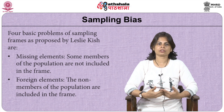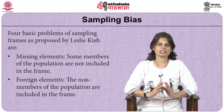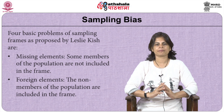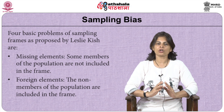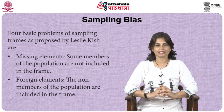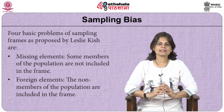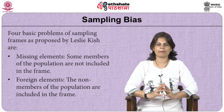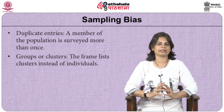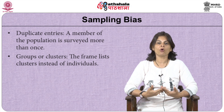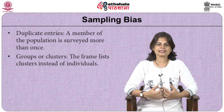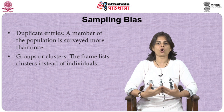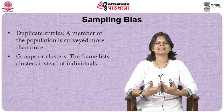What are the problems of sampling frames? According to Leslie Kish, 4 basic problems can be stated. First, missing elements — some members of the population are not at all included in the frame. Second, foreign elements — non-members of the population are also included in the sampling frame. Third, duplicate entries — a member of the population is surveyed more than once. And finally, groups or clusters — the sampling frame lists clusters or groups instead of individual units.